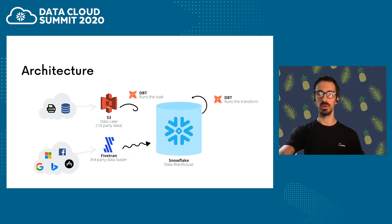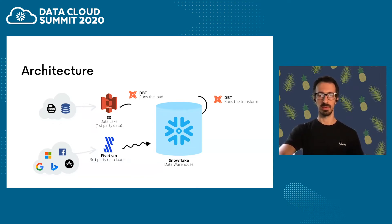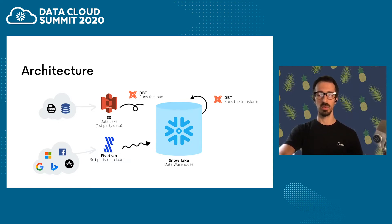If I were to give you a quick look at our architecture, it would be something like this. In this diagram, you can see Snowflake has two main inputs shown on the left-hand side. On one hand, we have first-party data that comes from S3 — it consists of events data and database snapshots. Third-party data comes via Fivetran, and we currently have more than 40 different systems plugged this way. The load frequency is managed within the application and is roughly happening constantly. DBT orchestrates the load of first-party data as well as running the transform jobs.